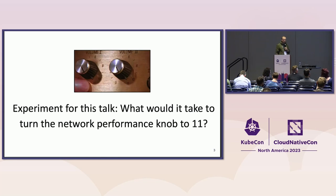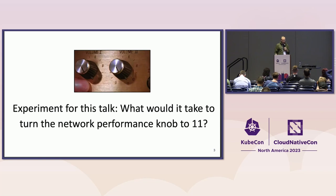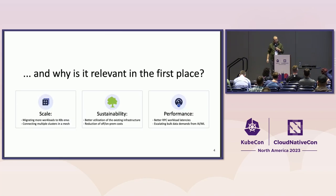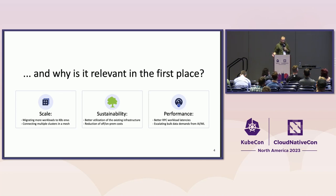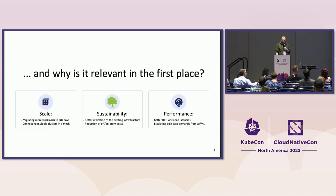The goal or experiment I had for this talk was basically, wouldn't it be nice to just turn on the volume knob and improve your performance? Unfortunately, it's not always that easy. But the question was really, what would it take to really get to maximum performance? Why is it relevant in the first place? One reason could be scale — you're adding more workloads to your Kubernetes environments, connecting multiple clusters in a mesh, and therefore the traffic being pushed around increases. Maybe sustainability, to better make use of your existing infrastructure or reduce costs, or performance-wise to reduce RPC workload latencies or to better cope with escalating bulk data demands from AI or machine learning workloads.